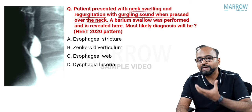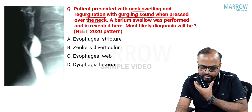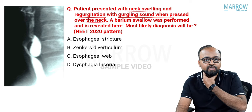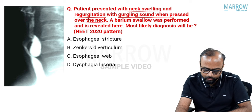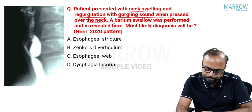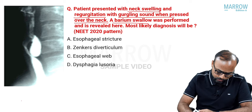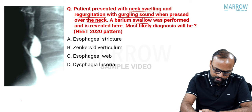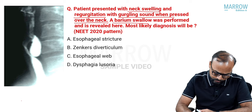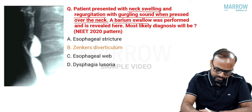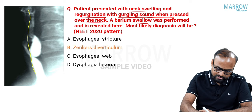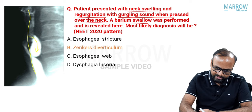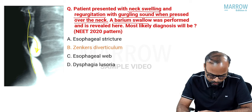This gives us a clue — some swelling which when pressed gives a gurgling sound, something related to bowel probably with retained contents within it. Barium swallow was performed. On this barium image, you can see the esophagus and there is a posteriorly directed outpouching from the esophagus.